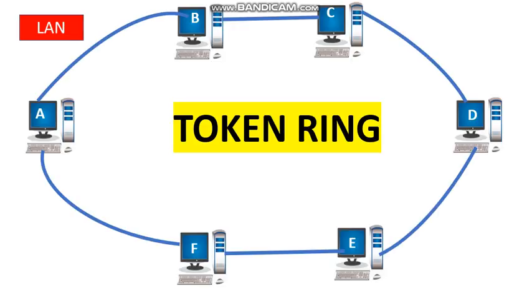In this video, I am going to explain about token ring and token passing. First, let us see what is token ring. A token ring network is a local area network in which all computers are connected in a ring topology.